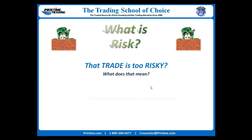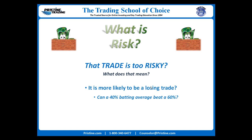Perhaps it means that the trade is more likely to stop out or be a losing trade, and therefore it's riskier. If you think that is true, here's the question: can a trader with a 40% batting average be more profitable than a trader with a 60% batting average? The answer is absolutely yes. So how can that make the trade riskier if the trade makes more money over time?